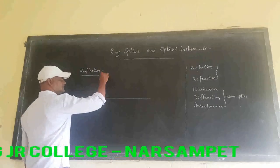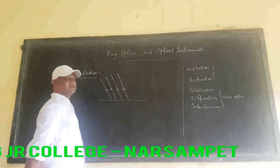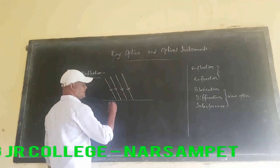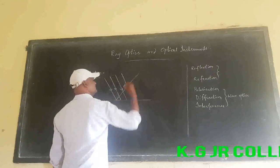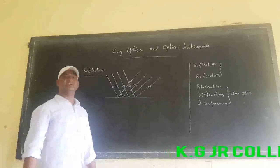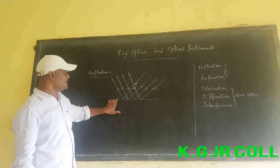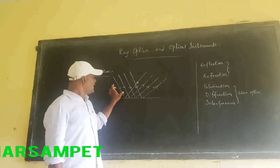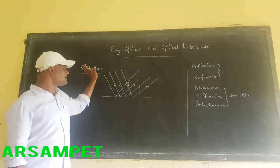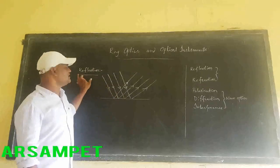When light waves travelling in a medium encounter a boundary, some parts of the incident light waves are returned into the same medium. This phenomenon is known as reflection.